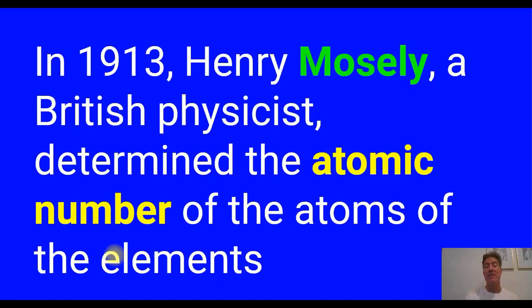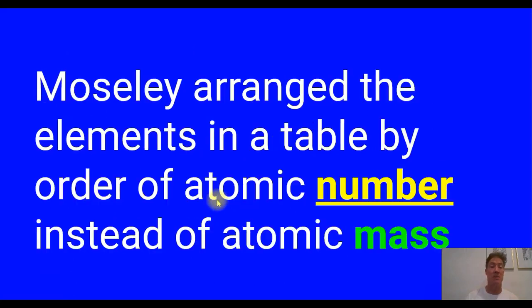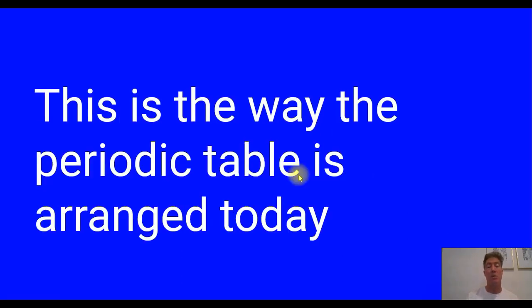In 1913, a British physicist named Mosley determined the atomic number of atoms by x-raying the nucleus to determine the proton count. Rather than arranging everything simply by weight, he arranged them by increasing proton count — increasing atomic number. That is the way the modern periodic table is arranged today. If you want to remember the difference: Mendeleev ordered them by atomic mass; Mosley ordered them by atomic number.